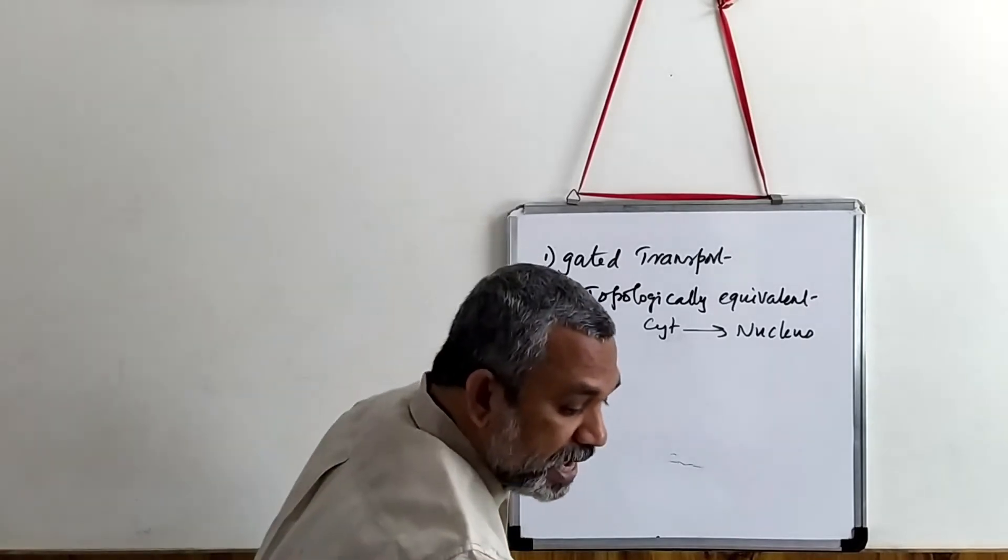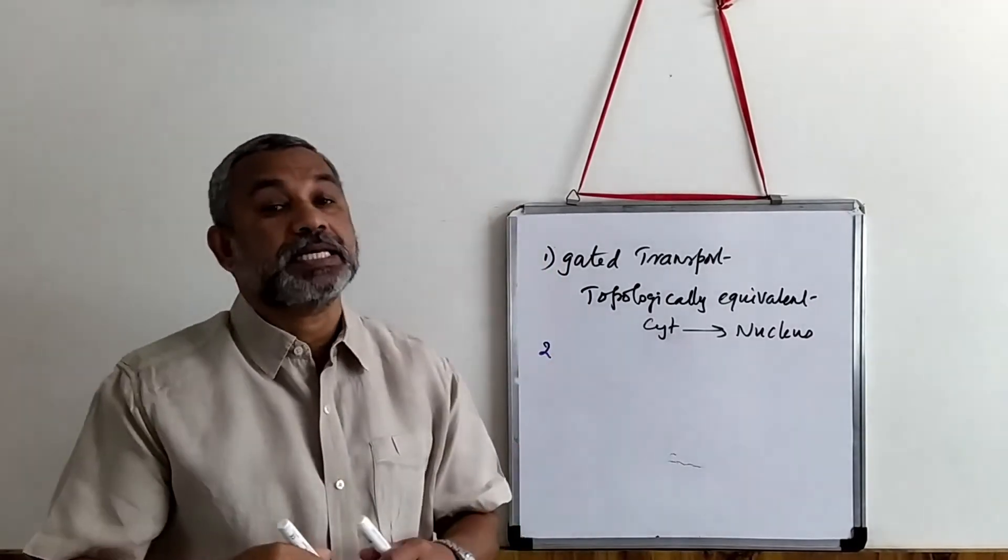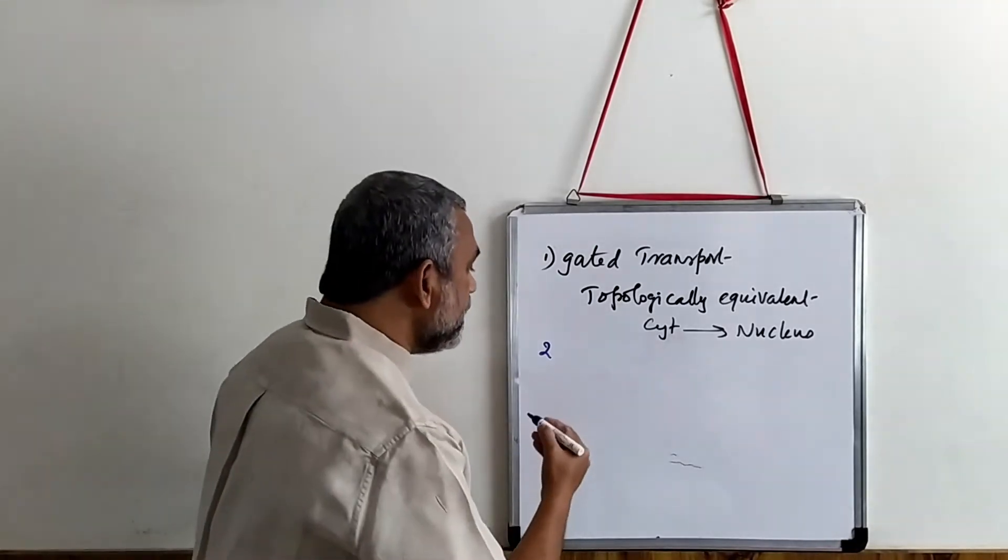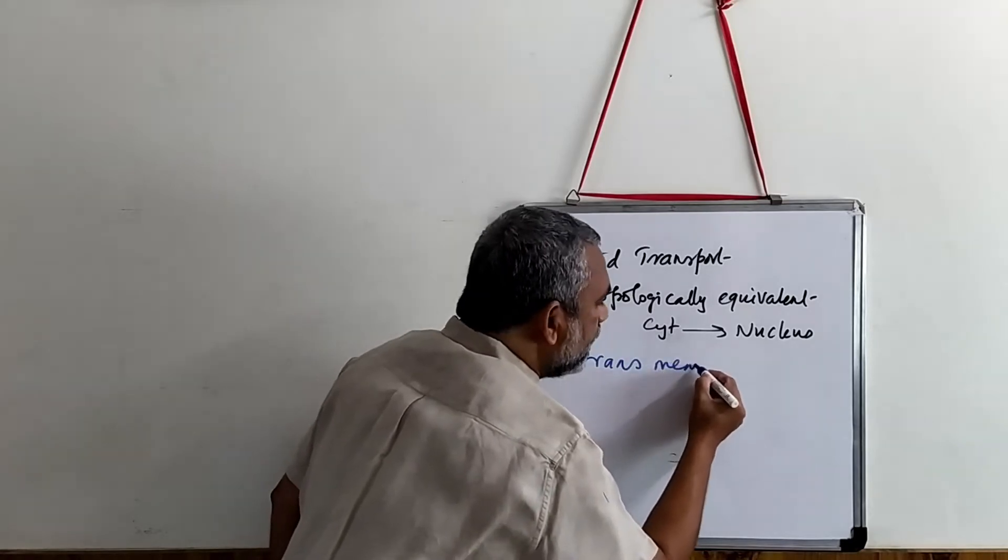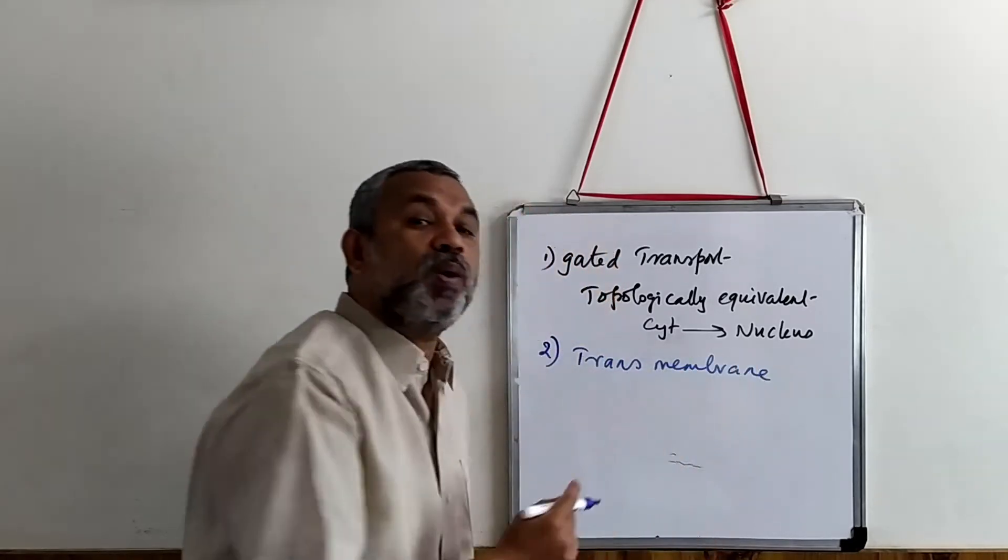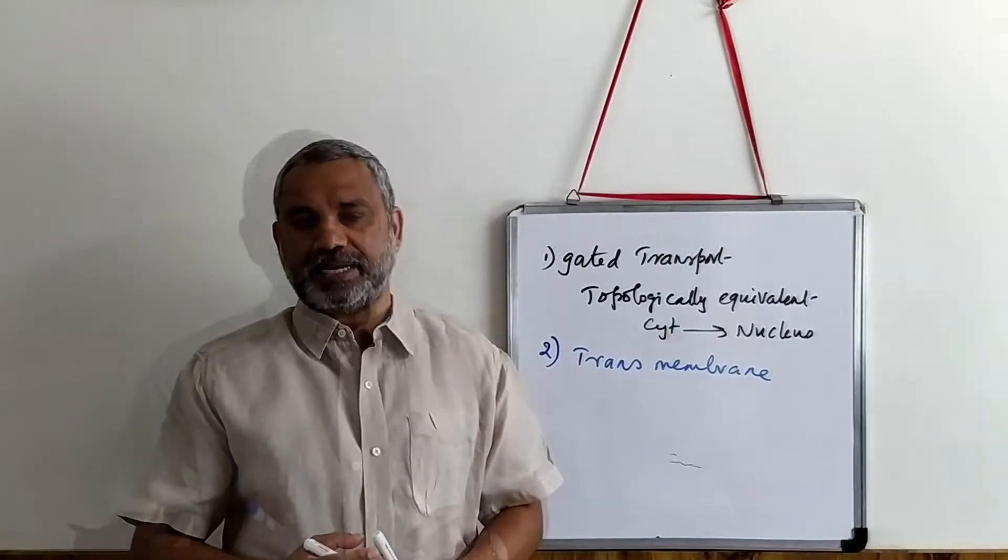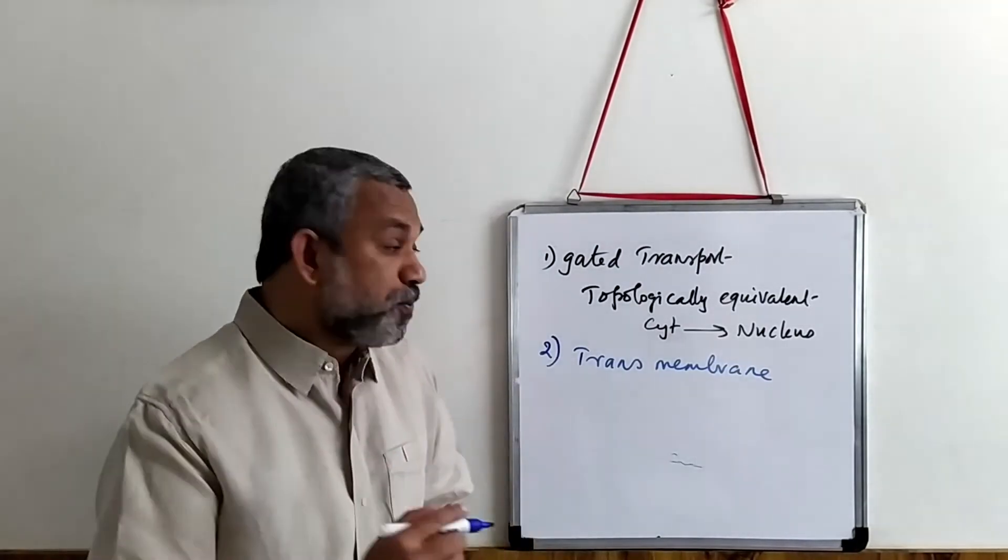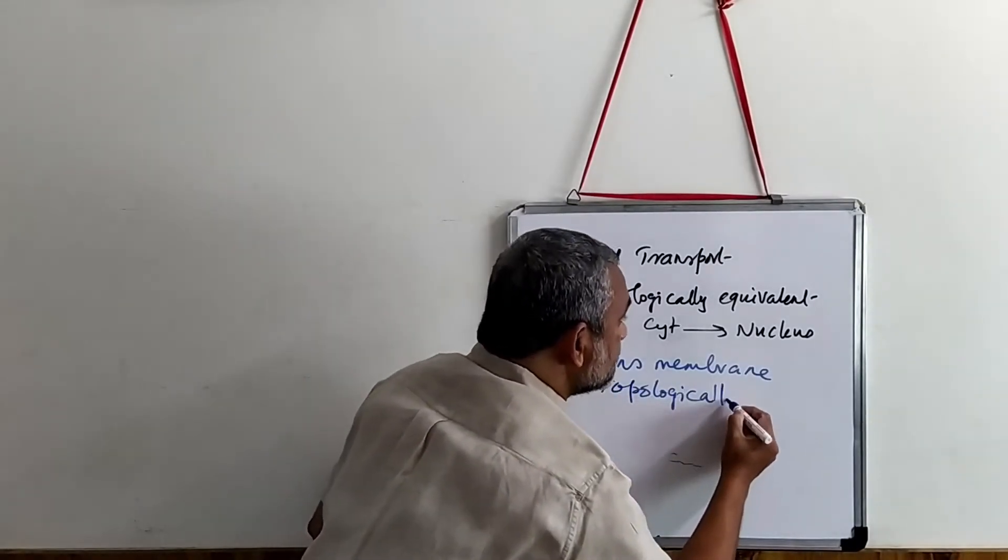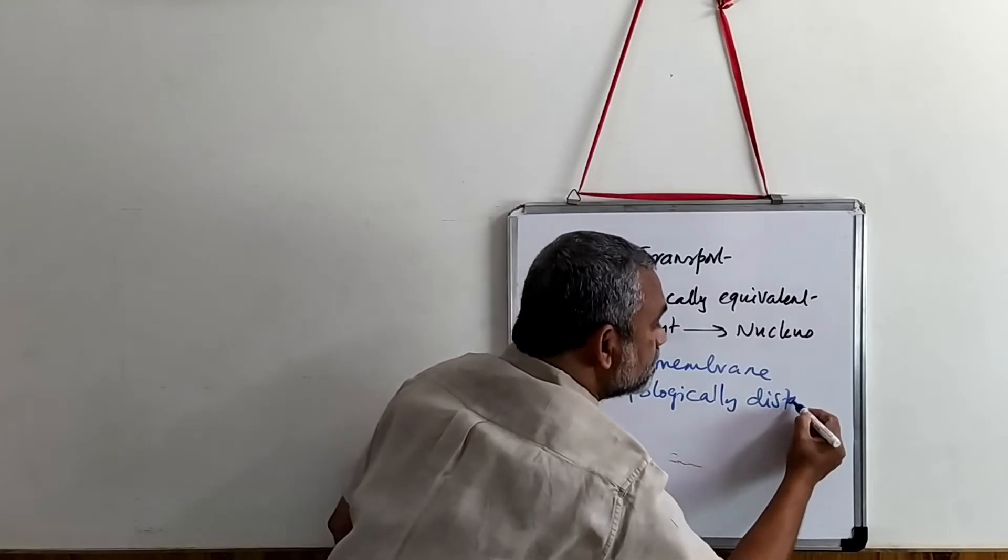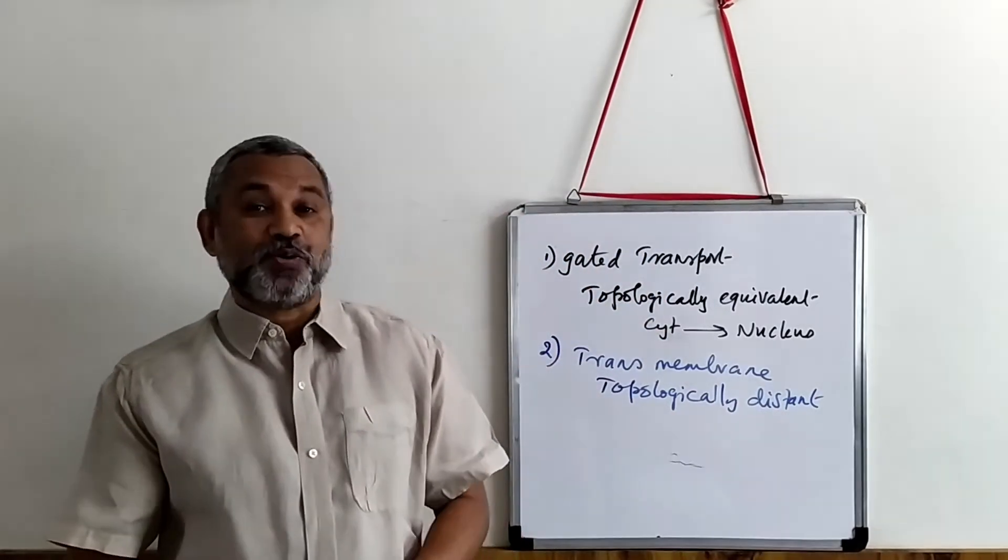The second type of transport is transmembrane transport. You require a transport protein known as the translocase protein. Here, it is transporting to topologically distant spaces by using a translocase protein.